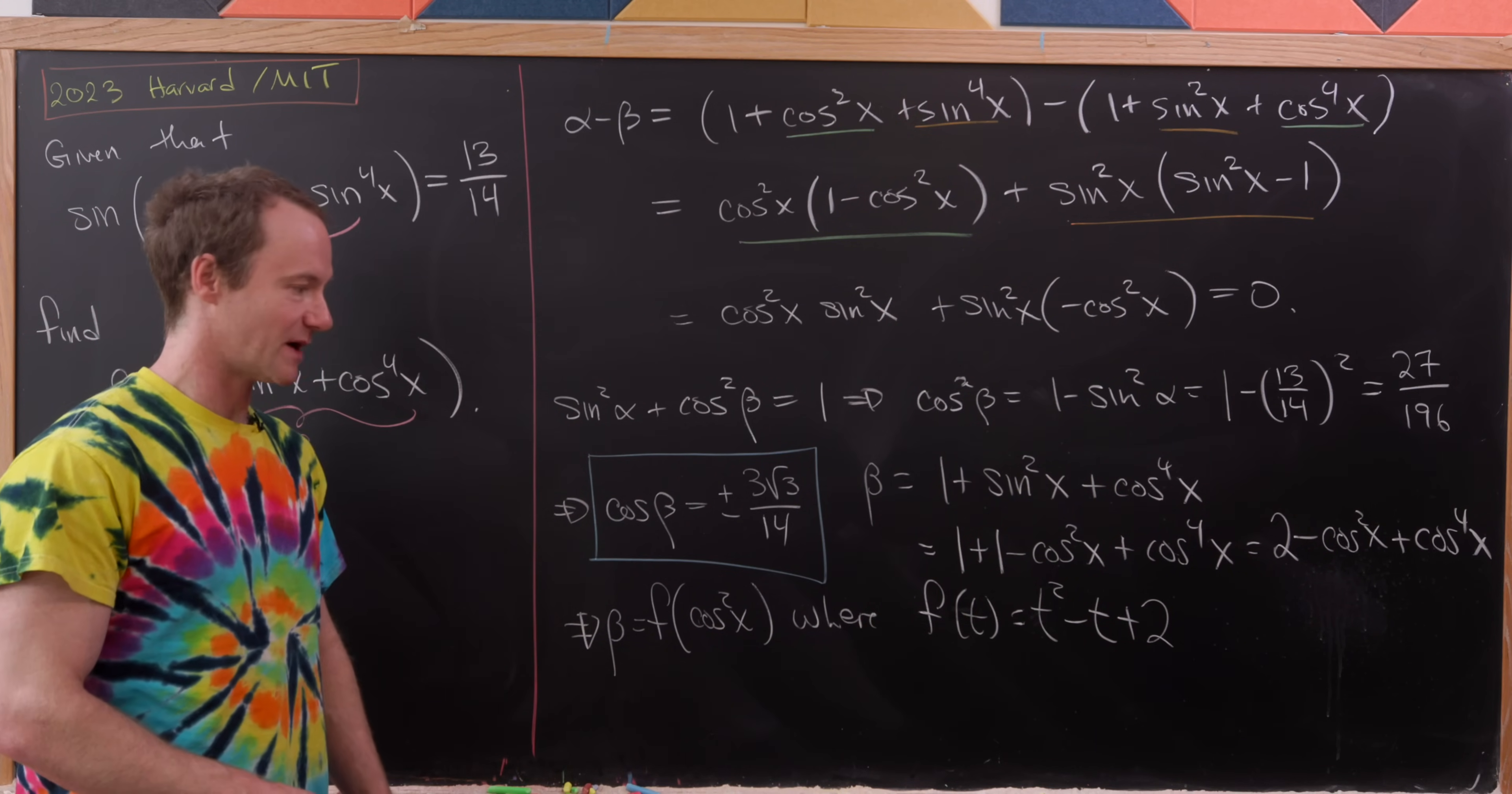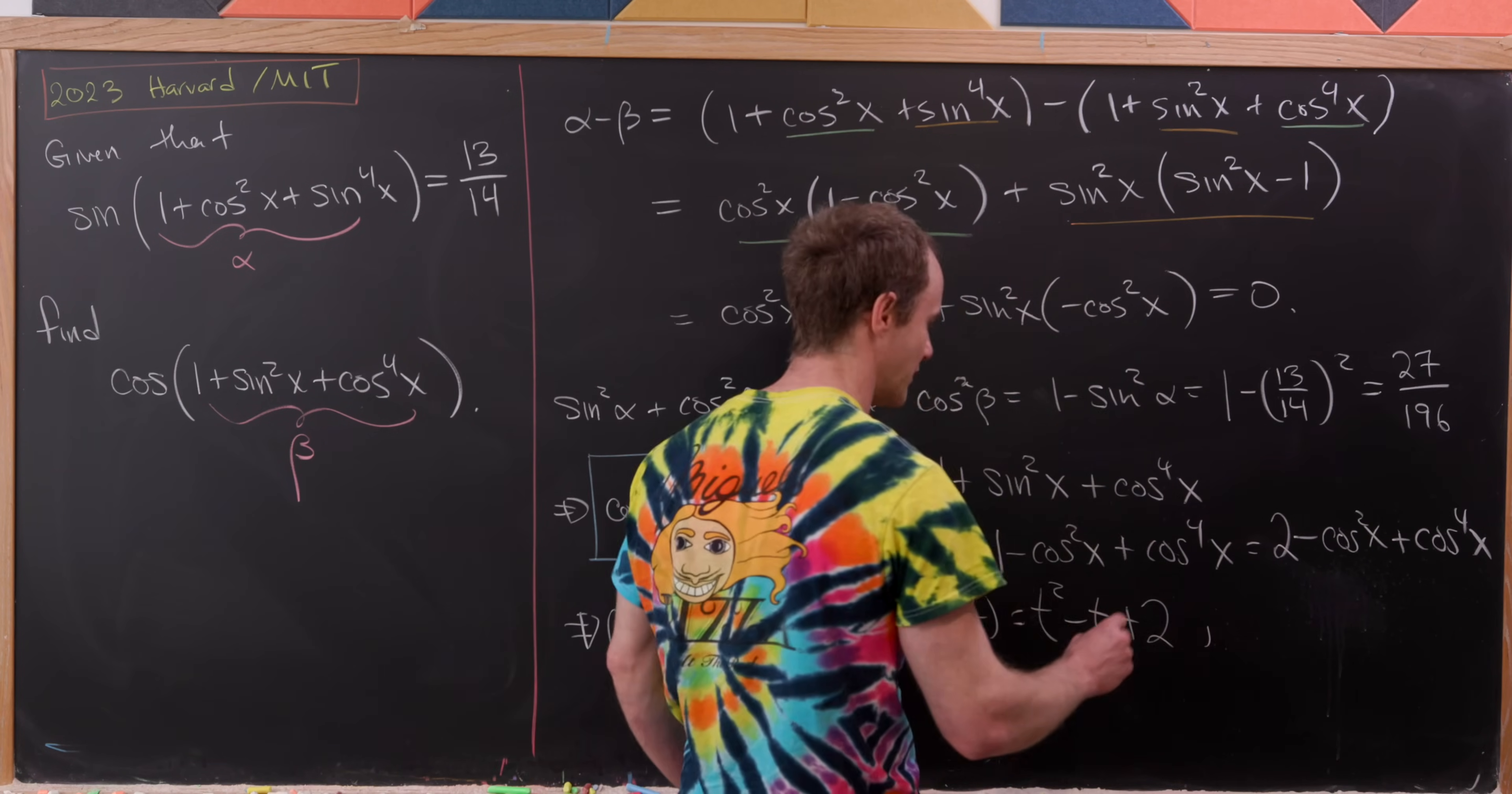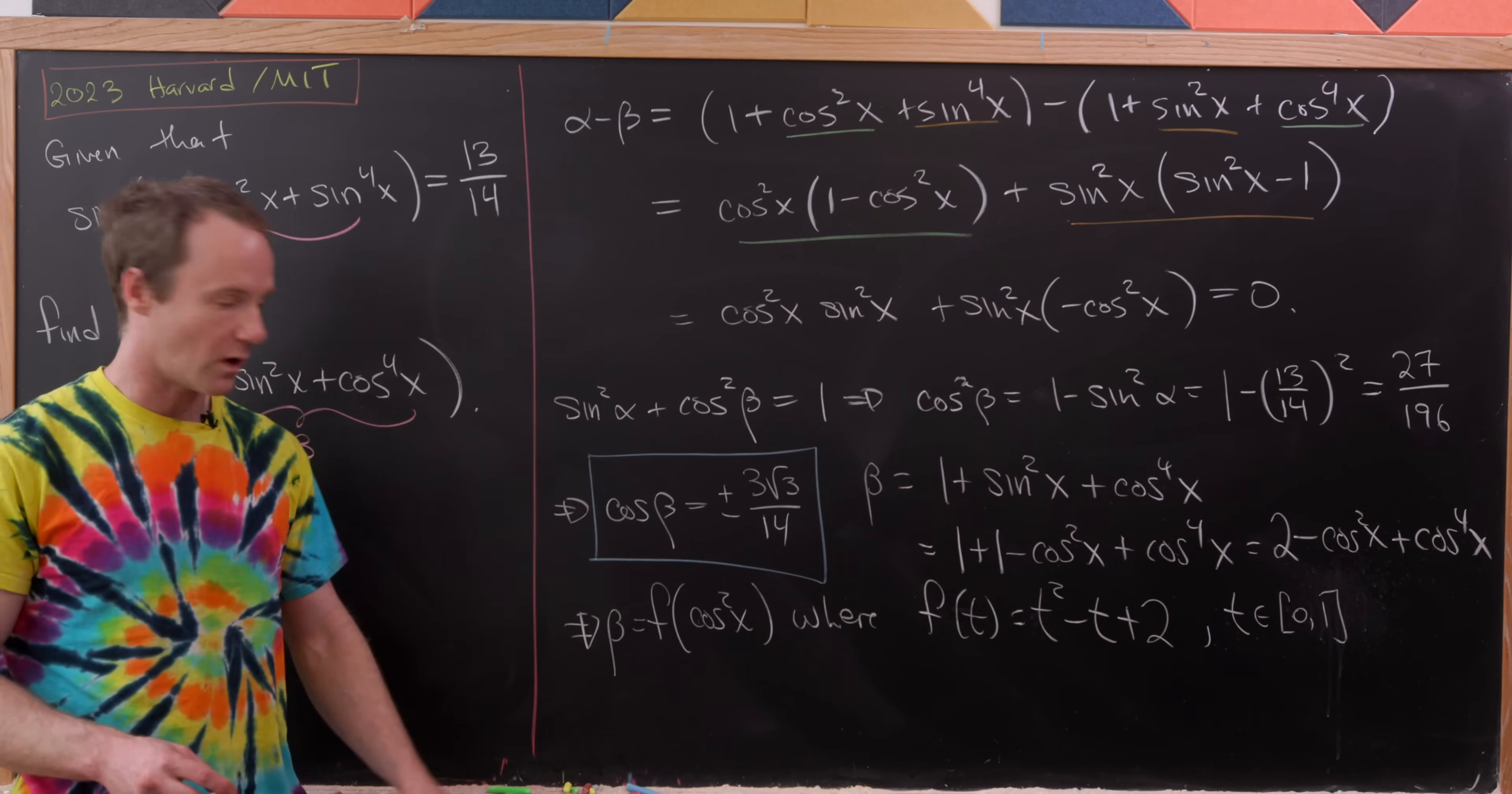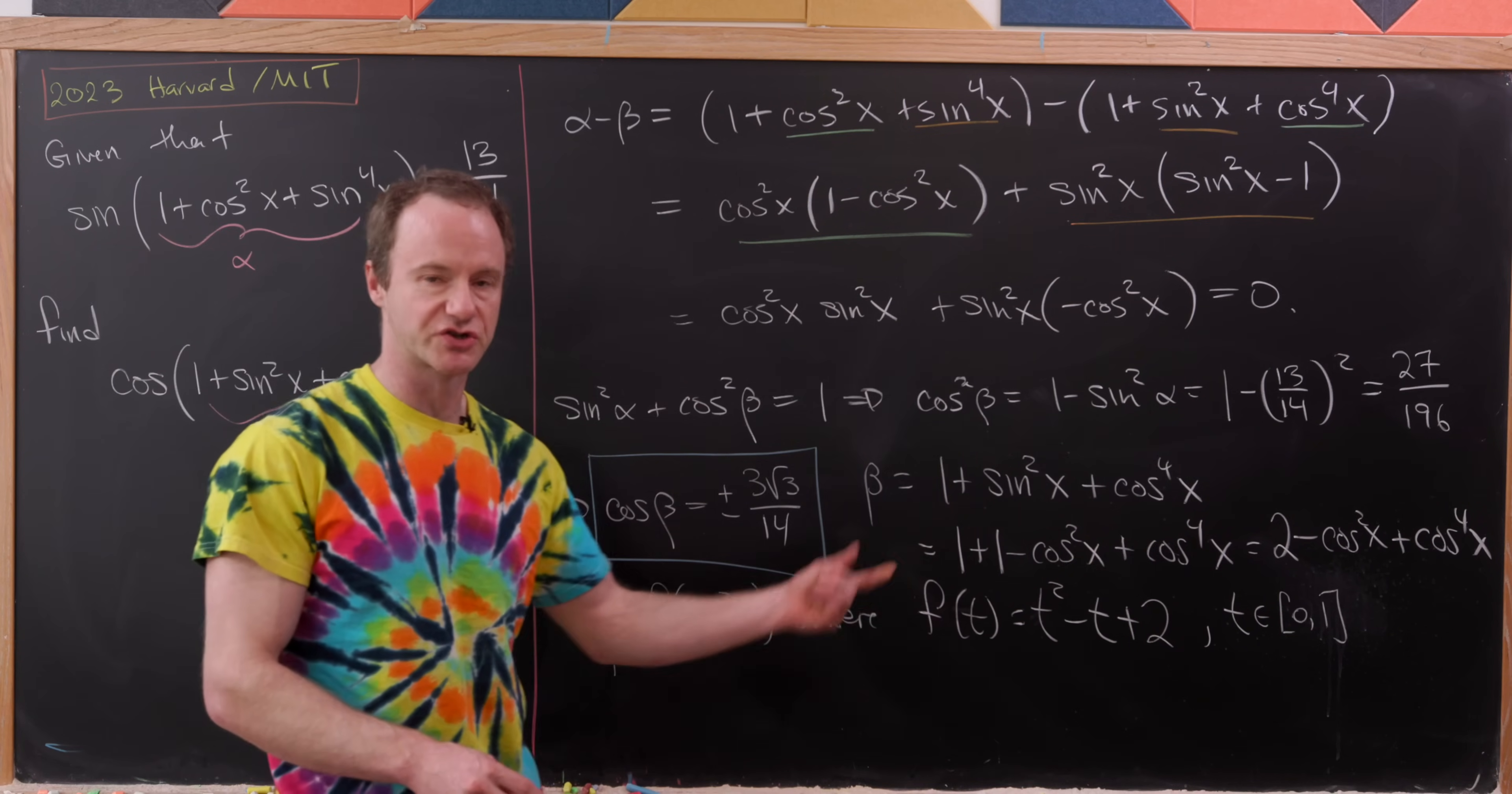But now what we can do here is we can use the extreme value theorem to find the minimum possible value and the maximum possible value of our function f(t). Let's observe that since we have cos²x here as our input, that means we are restricting t between 0 and 1, because the largest cosine can be is 1, but since we're squaring it, the smallest cos²x can be is 0.